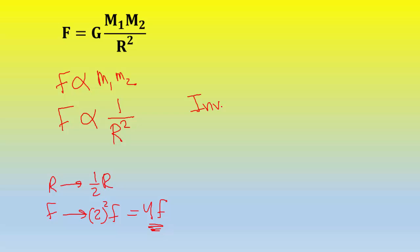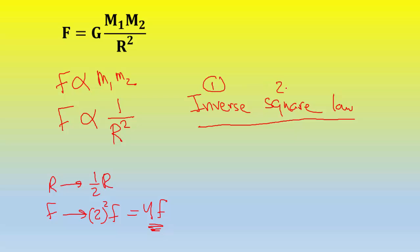The force will change by the inverse square of 1/2. The inverse of 1/2 is 2, and then you square it: 2² = 4. So the force will increase fourfold if you cut the distance by half — meaning if you bring the two objects closer together. Remember: first take the inverse, then square.